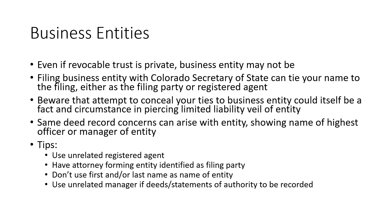With business entities, it's important to note that this also creates another area where privacy can be breached, mainly because to create a business entity you have to file with the Colorado Secretary of State if it's a Colorado entity, and many other states have their own Secretary of State or Division of Corporations that requires a filing to create the entity. This filing can tie your name to the entity, typically as the filing party or the registered agent or both. Usually the purpose behind a business entity is to shield your personal assets from any claims against the entity, but if it shows that the two of you are alter egos and there's really no distinction between you and the entity, that could create grounds to pierce the limited liability veil of the entity itself.